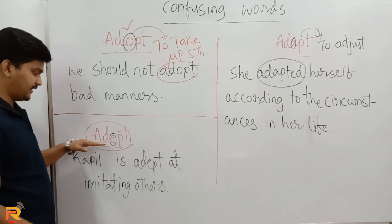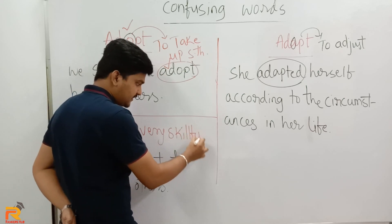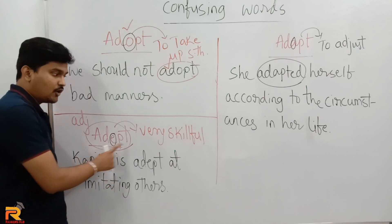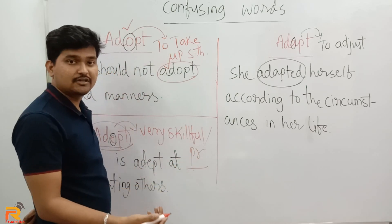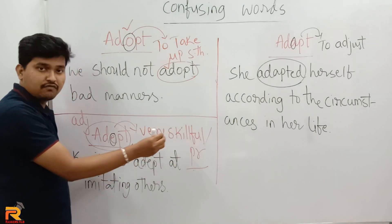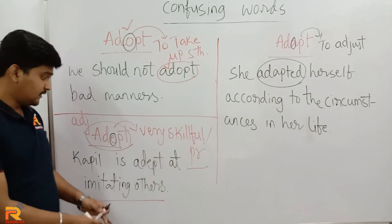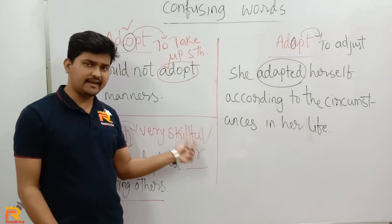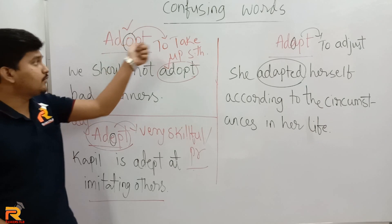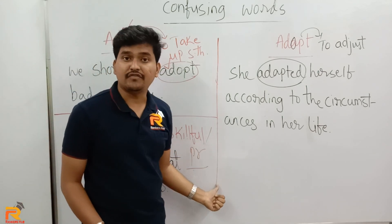The word adept is not very widely used. The meaning of adept is very skillful. It is an adjective that shows a quality — very skillful, proficient, or expert. For example: 'This couple is adept at imitating others' — meaning they are very expert and skillful at imitating people. So: adopt means to take up something; adapt means to adjust; adept describes the quality of being very skillful, proficient, or expert.